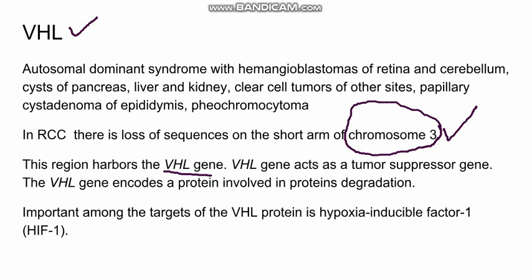VHL syndrome is an autosomal dominant syndrome. Patients have clear cell carcinoma of the kidney, and apart from that, they also have hemangioblastoma of the retina or cerebellum. There are cysts of the pancreas, liver, and kidneys, clear cell tumours of other sites, and very importantly, pheochromocytoma is also present.